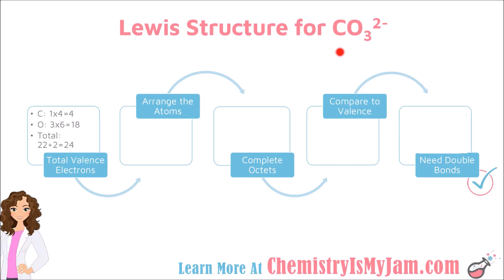We're going to look at one more example. This time it will be a molecule that has a charge — this is the polyatomic ion carbonate. Carbonate has one carbon, three oxygens, and a total charge of negative 2. I added up the total valence electrons: one carbon with 4 valence electrons, and three oxygens each with 6 valence electrons, giving me a total of 22. The carbonate ion has a negative 2 charge, meaning it has gained two electrons, so two electrons are added to my total. 22 plus 2 gives me a total of 24 valence electrons.